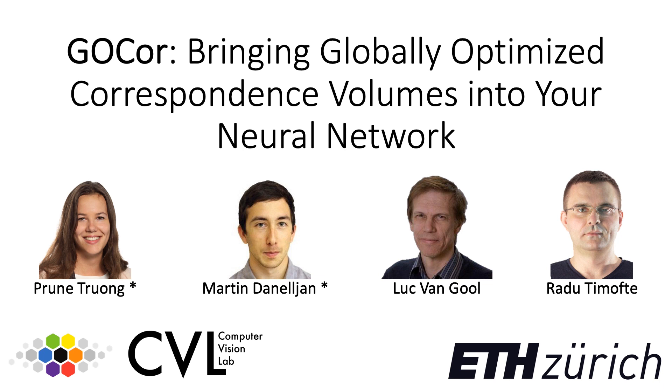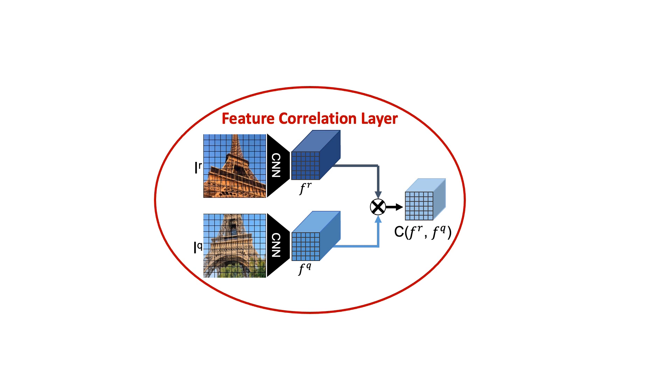This is GoCore, bringing globally optimized correspondence volumes into a neural network. In this work, we're posing an alternative to the feature correlation layer, which is a fundamental CNN block in a wide range of applications.